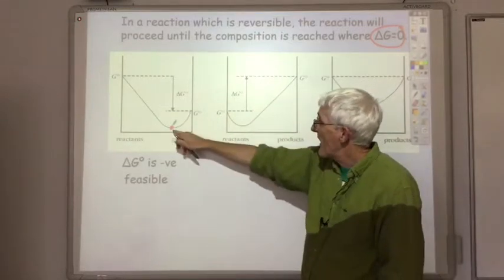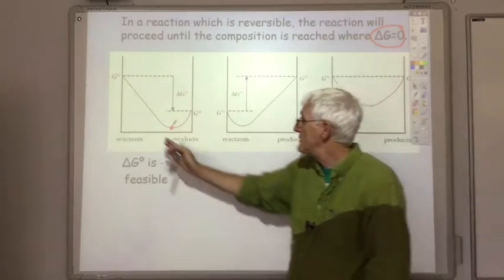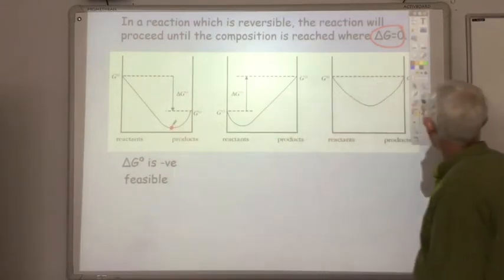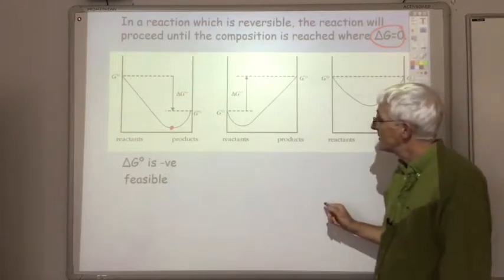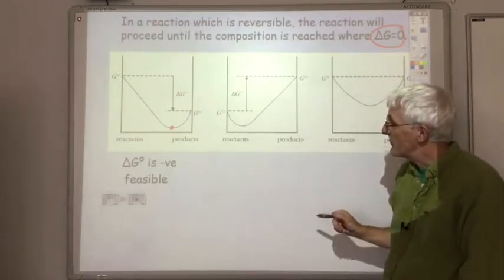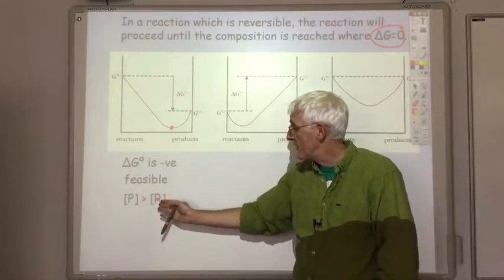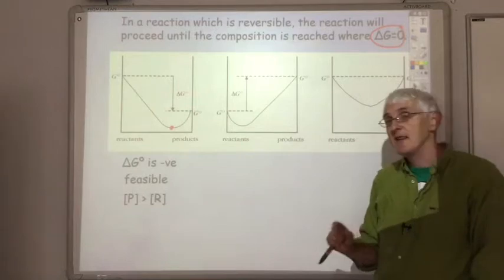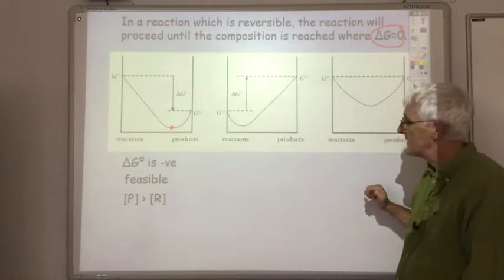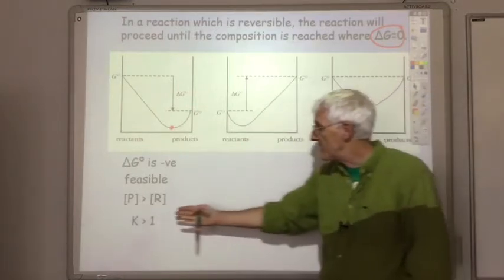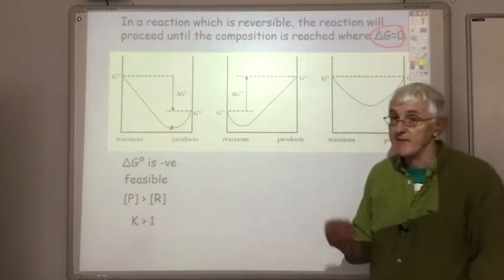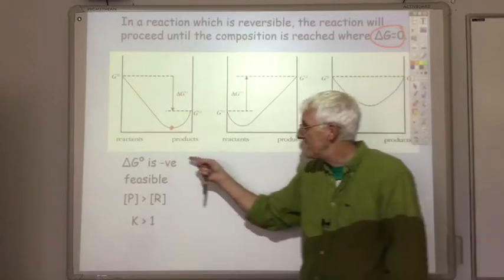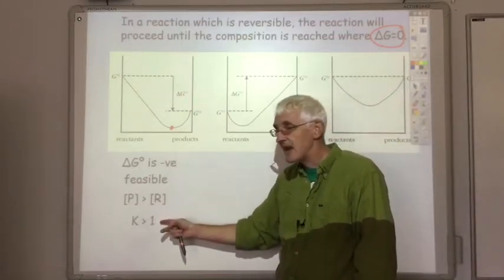That turning point will be the equilibrium position, where most of the reactants are turned into products, but not all of them. At equilibrium, the concentration of products will be far greater than the concentration of reactants, and that will be reflected in the equilibrium constant. So your equilibrium constant will be greater than one, in many cases far greater than one. You have to get this connection in your head between the delta G value and the K value.